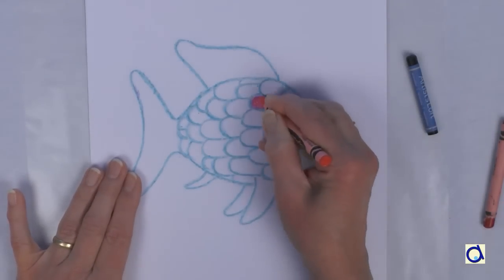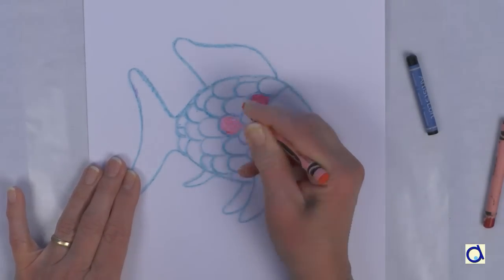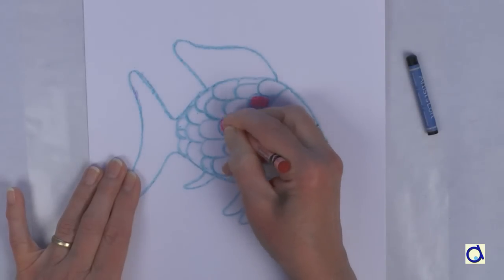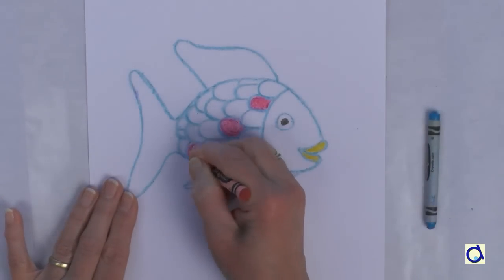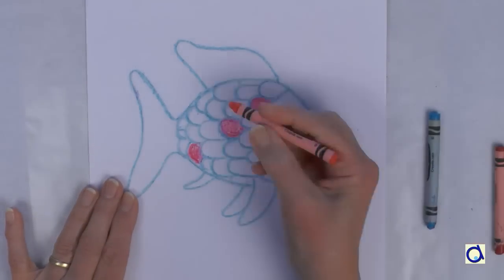In addition to integrating reading with art activities, this project can be used to talk about science topics such as the physical appearance of the fish. Fish have fins to help them balance and swim in the water.